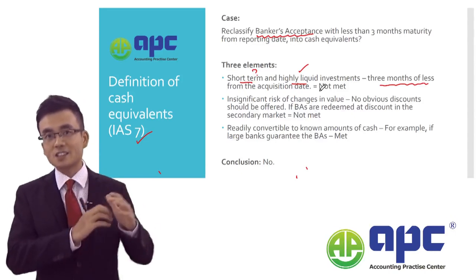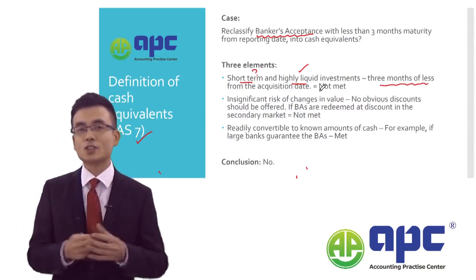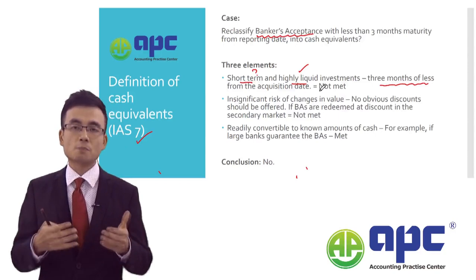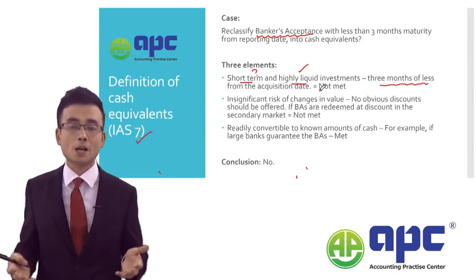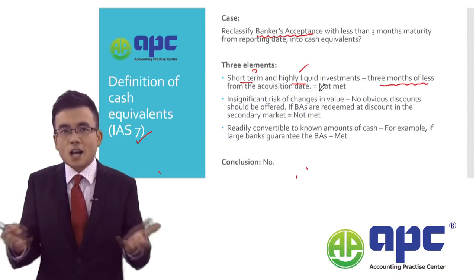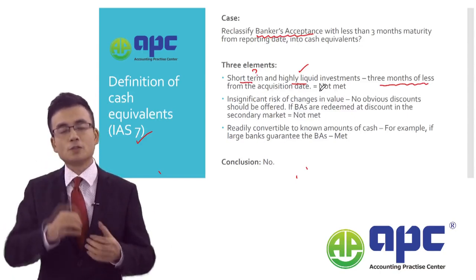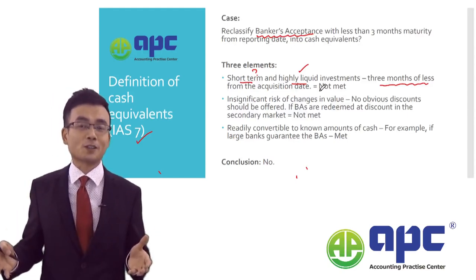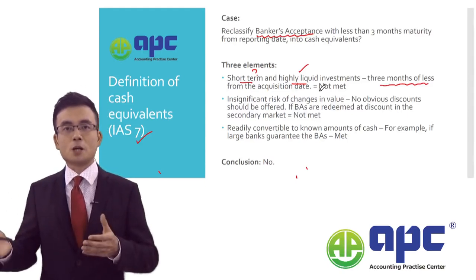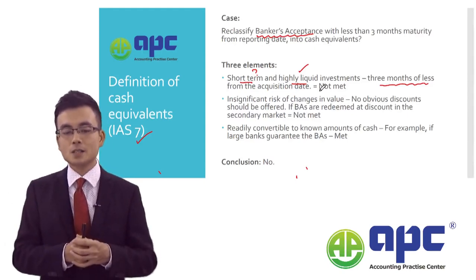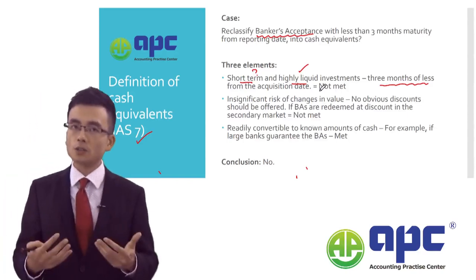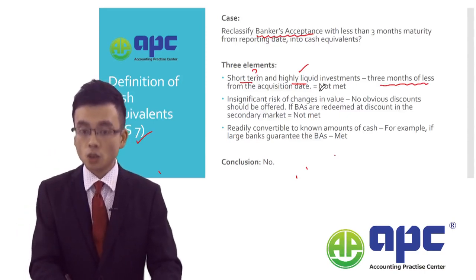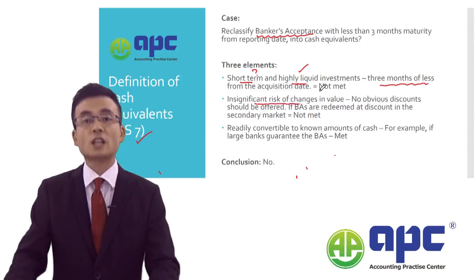Besides this criterion, the finance director argued that she could easily convert the banker's acceptance into cash in the secondary market by discounting it. I asked her how, and her response was to discount the banker's acceptance in the secondary market and get cash when needed. According to IAS 7, the second criterion for cash equivalents is that there should be no significant risk of changes in value.